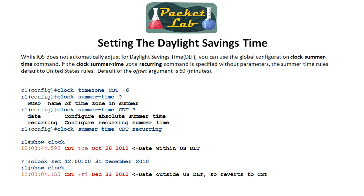The command to apply daylight saving time is `clock summer-time`. Here we've set our time zone to central standard time at minus six, so for summer time we'll be minus five. Set the display name — CDT for central daylight time — and then use the keyword `recurring`. In the United States that's all you need; it sets a one-hour offset and automatically uses the correct US daylight saving time dates.